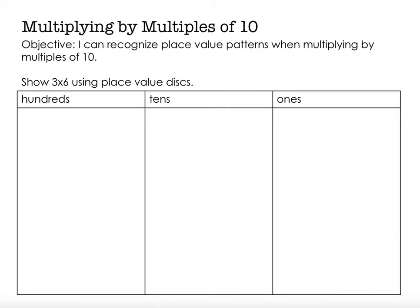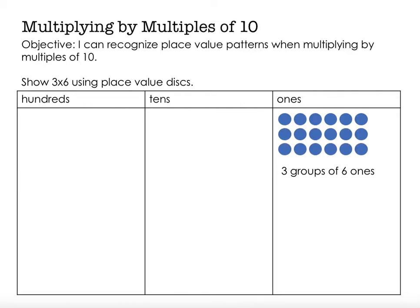Show 3 times 6 using place value disks. Another way of saying 3 times 6 is 3 groups of 6 ones. So I'm going to show 3 groups of 6 ones. Here's 1 group of 6 ones, a 2nd group of 6 ones, and a 3rd group of 6 ones. I have an array that's 3 times 6. If I count by 6s, I have 6, 12, 18 ones. So 3 times 6 is 18.